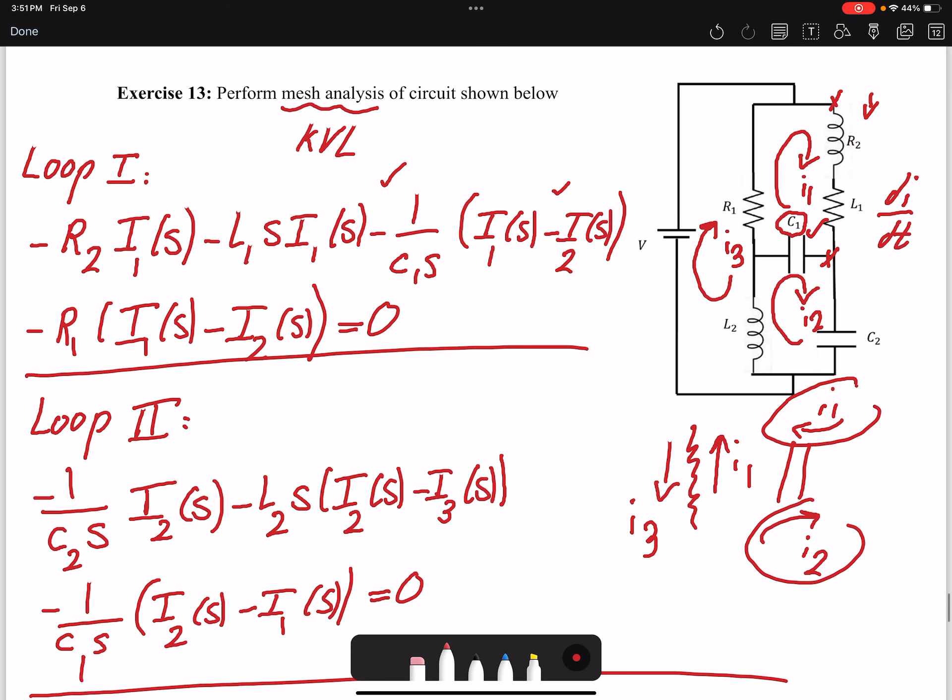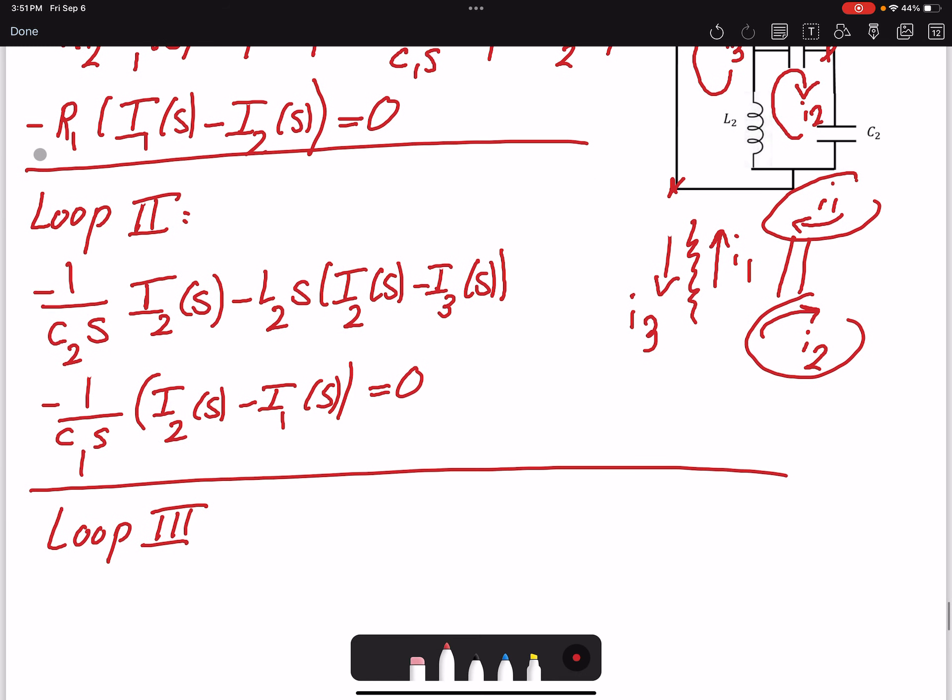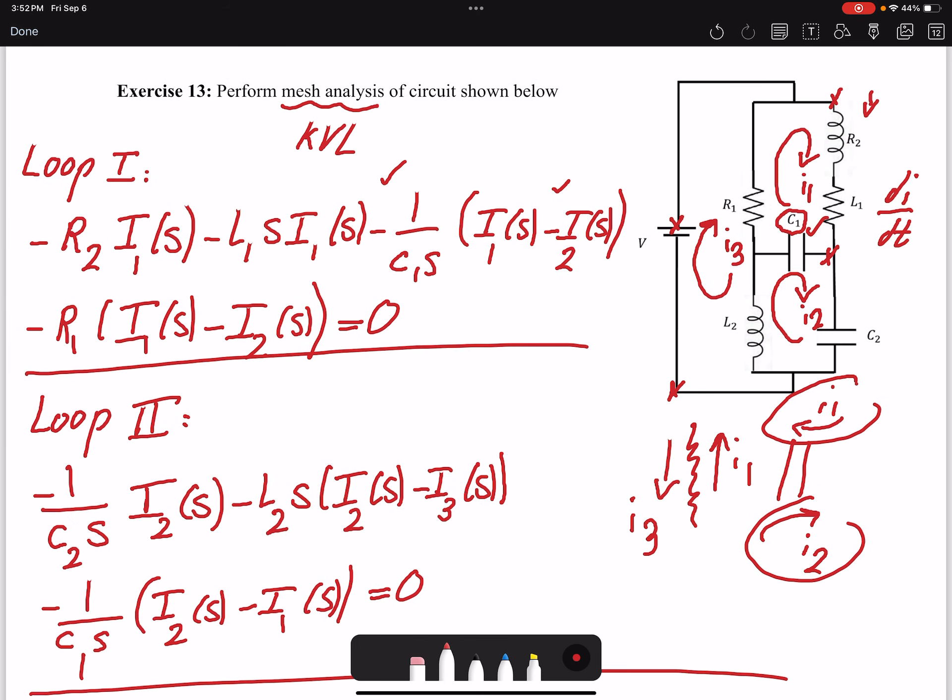I'm going to start here for Loop 3, to include the effect of V. Or we can think of it as here. Here we go: from negative to positive, I have the voltage, minus R. Here we have this R, so I'll go here, then come here, and then go here. That's the path I go for this.